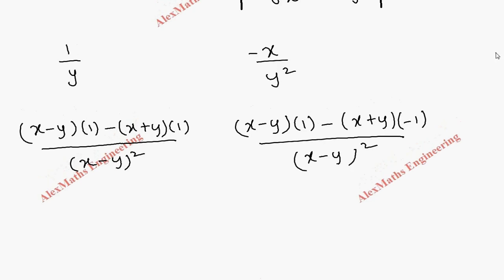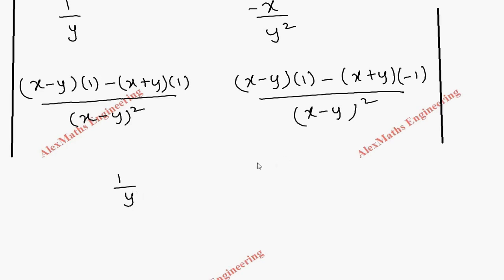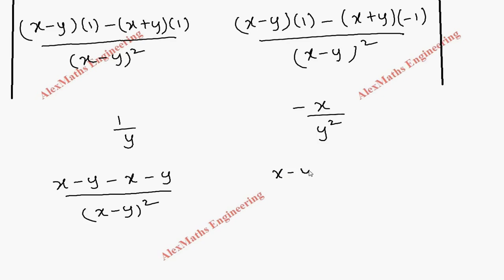So we have completed the four elements. Let's simplify the terms now. The first element is 1/y as it is. The third element is −x/y². For the second element, this becomes (x−y) minus (x−y), divided by (x−y) whole square. For the fourth element, it becomes (x−y) plus (x+y), divided by (x−y) whole square.